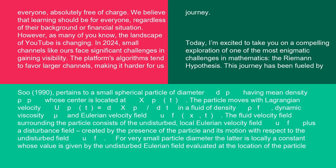The particle moves with Lagrangian velocity up(t) = dxp/dt in a fluid of density ρf, dynamic viscosity μ, and Eulerian velocity field uf(x,t). The fluid velocity field surrounding the particle consists of the undisturbed local Eulerian velocity field uf plus a disturbance field created by the presence of the particle and its motion with respect to the undisturbed field uf.